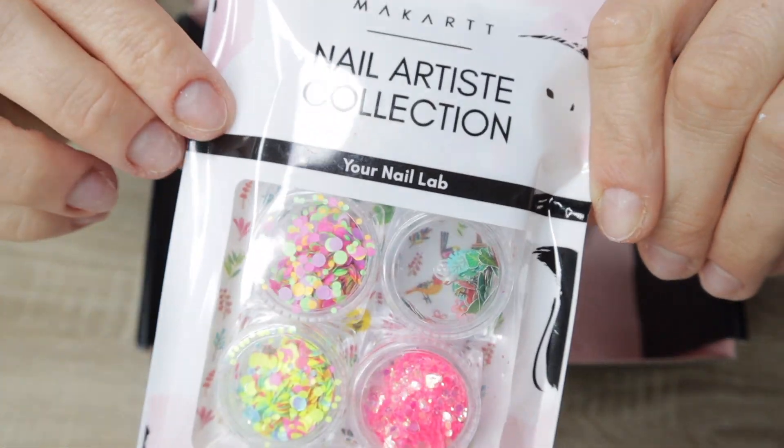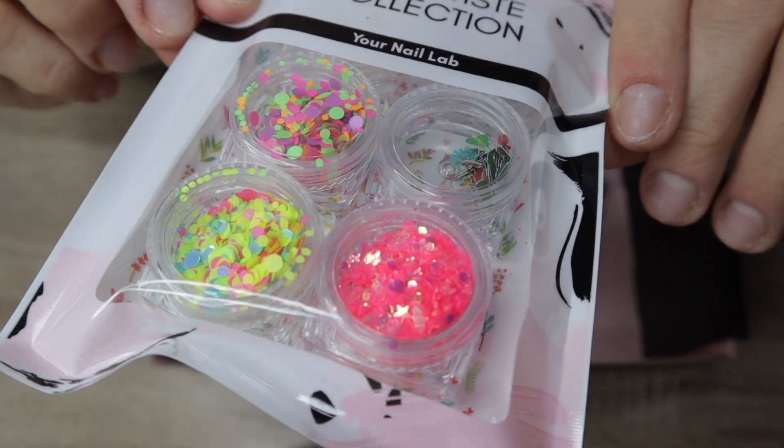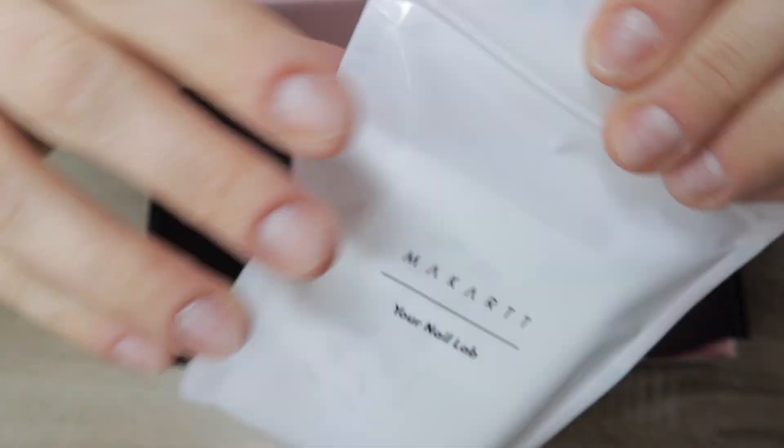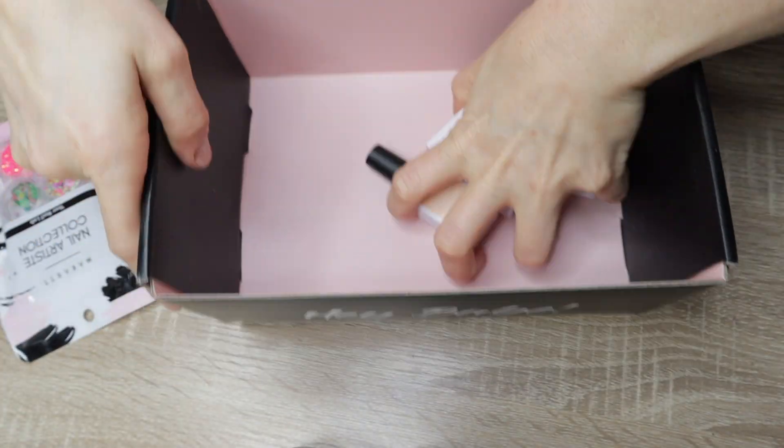They also included some glitters and little charms and stickers, so that's really cool. I know the one I got in June had really big charms that I was like, I don't know if I can use those. So these look a lot smaller and usable for me.